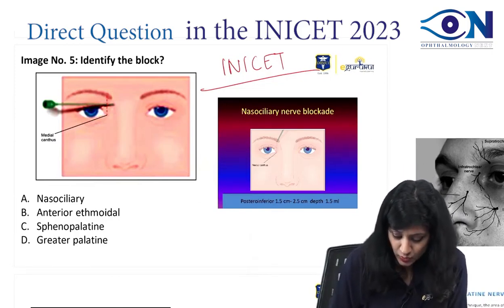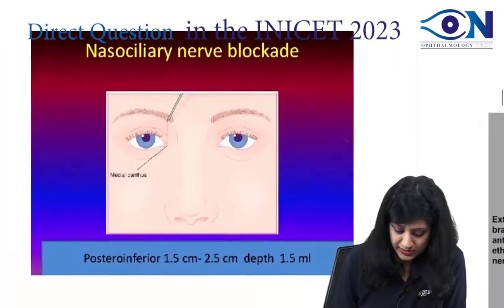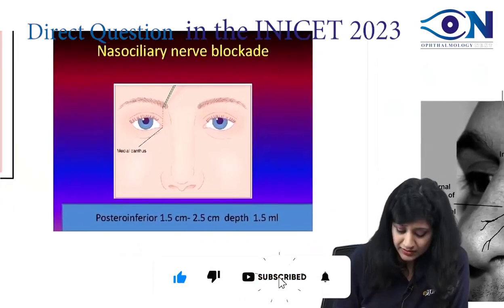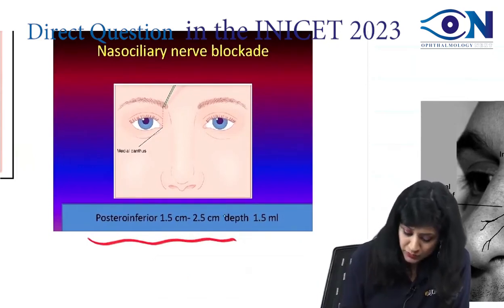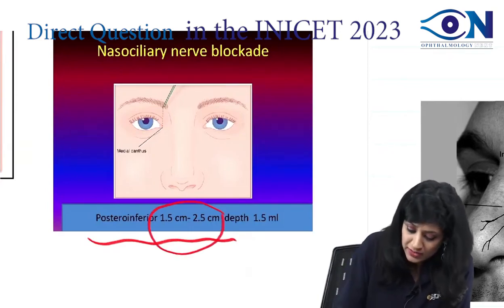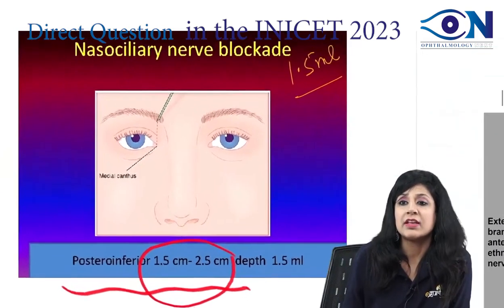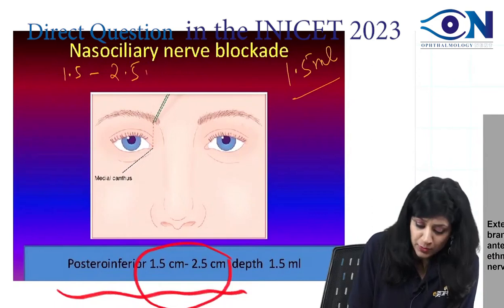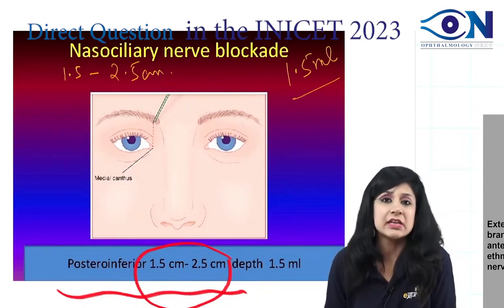They are asking you to identify the block. They are giving near the middle canthus. This is typically your nasociliary block, which is given at the level of the posterior. We are going posteriorly and inferiorly — about 1.5 to 2.5 centimeters depth — and how much we are giving is about 1.5 ml. So you have to remember: near the middle canthus, go 1.5 to 2.5 centimeters, and give 1.5 ml. This is your nasociliary block.